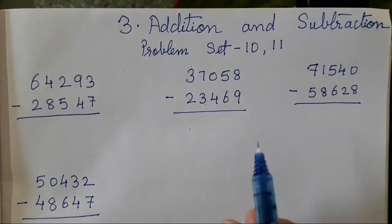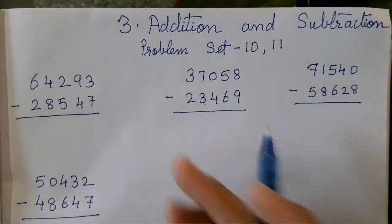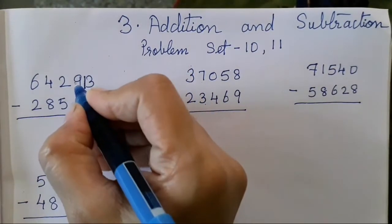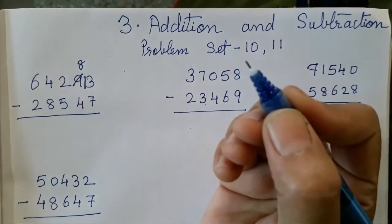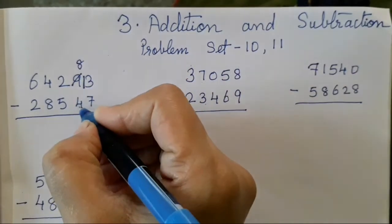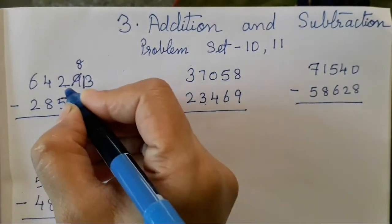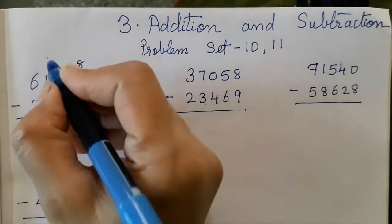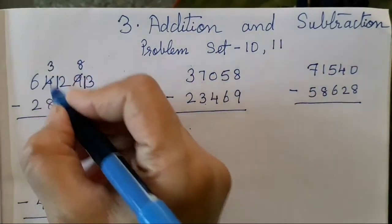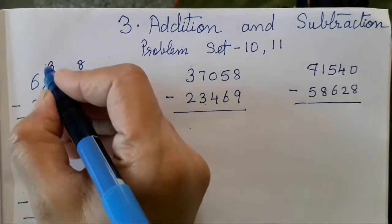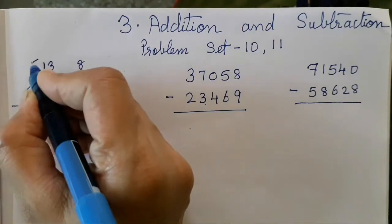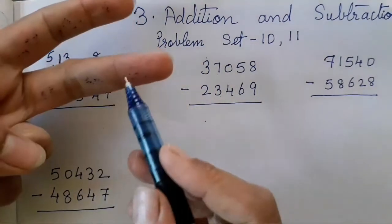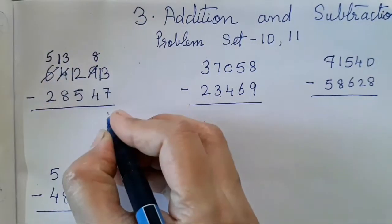Now these are the sums already given in your question, so you all have to just subtract. So 3 and 7 cannot be subtracted, so this we have to make as 13. 1 we have borrowed from 9, so it will become 8. 8 and 4 can be subtracted, but 2 and 5 cannot be subtracted because 2 is small, so this will become 12. 1 we have got from 4, so this will become 3. Now 3 and 8 again cannot be subtracted because 3 is smaller, so we have to borrow 1 from 6 — so 6 minus 1 is 5. Count after 7: 8, 9, 10, 11, 12, 13 — so the answer is 6.